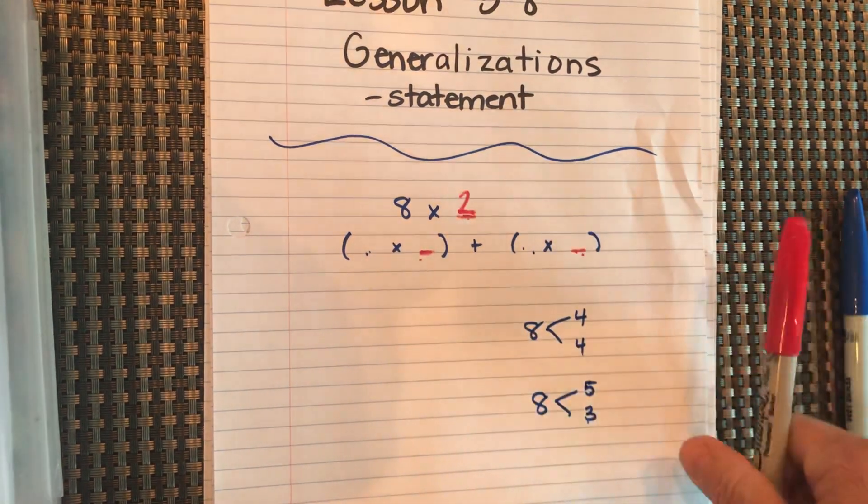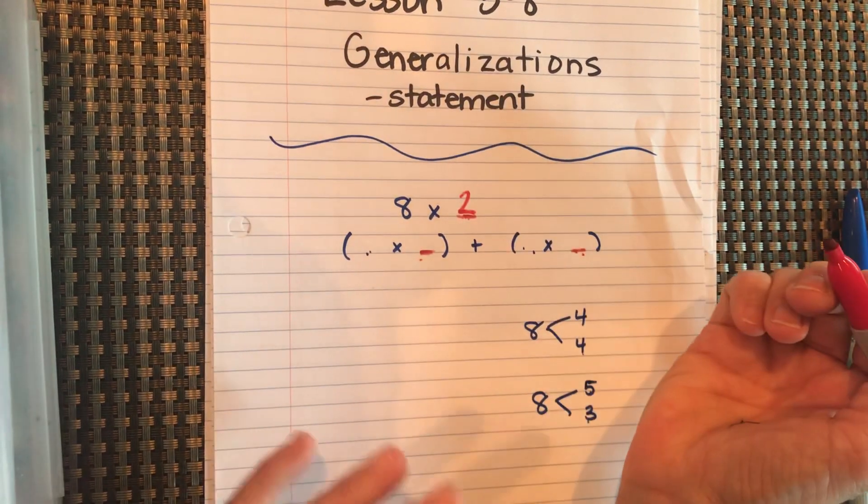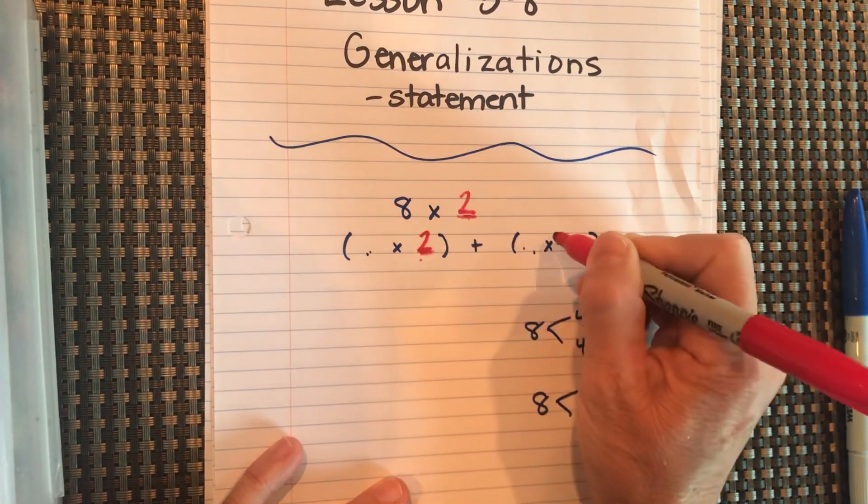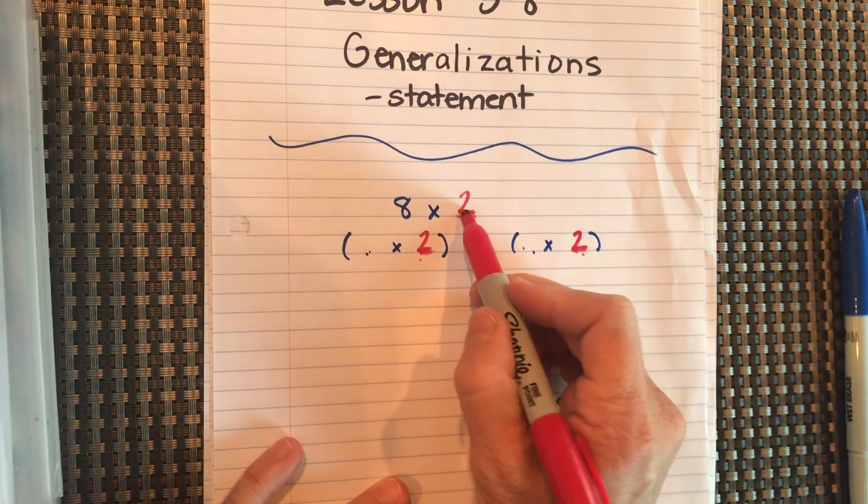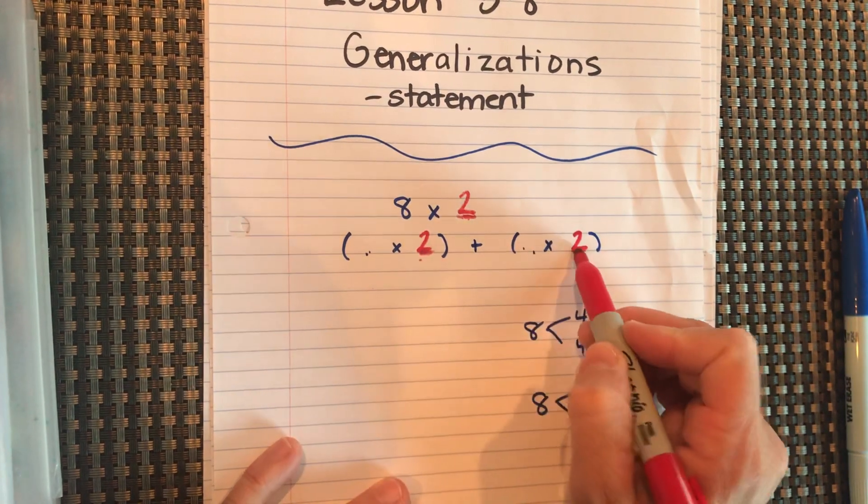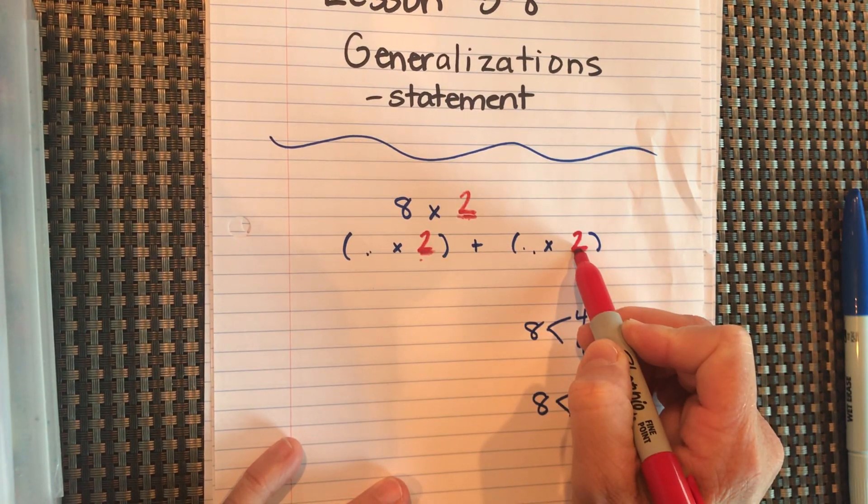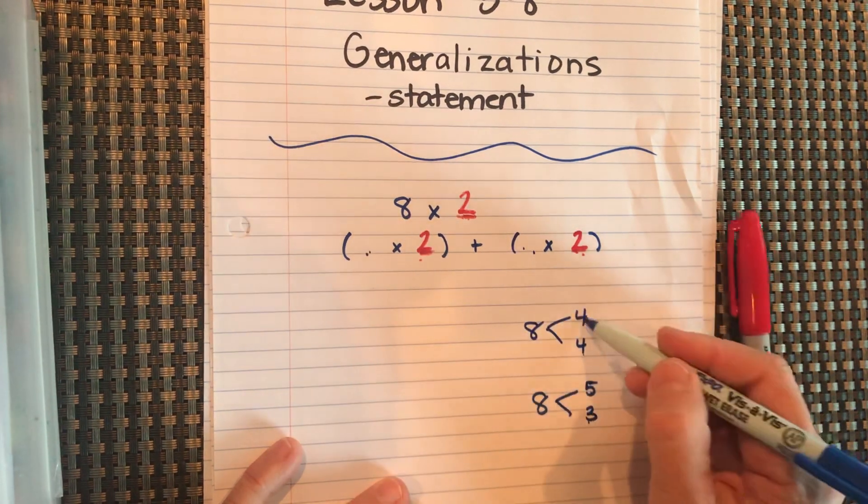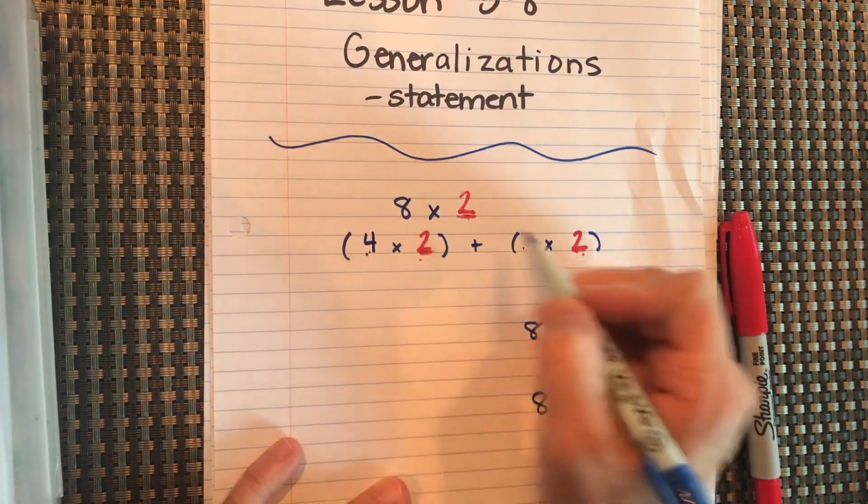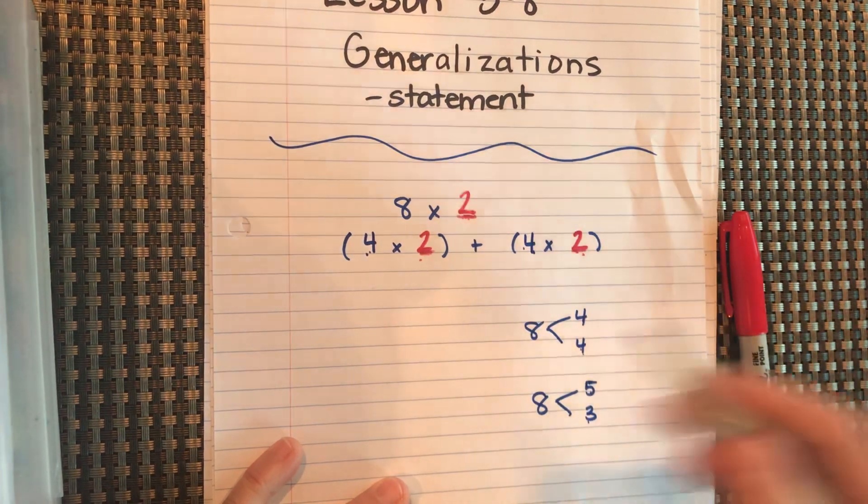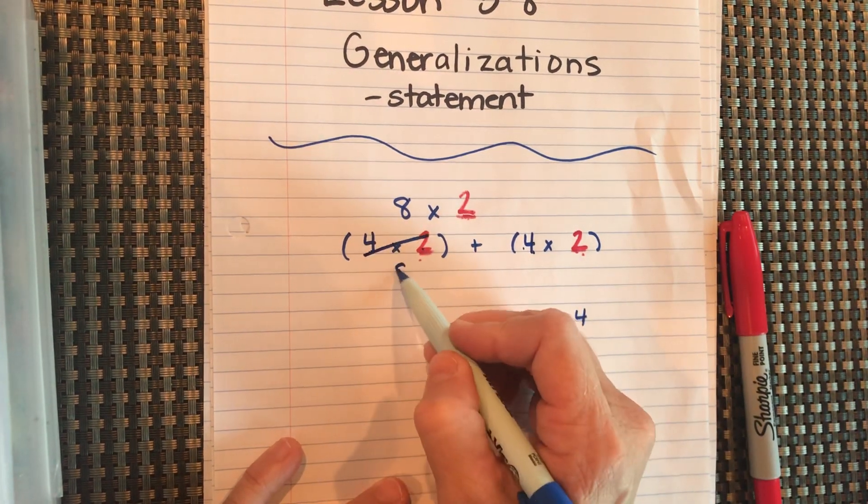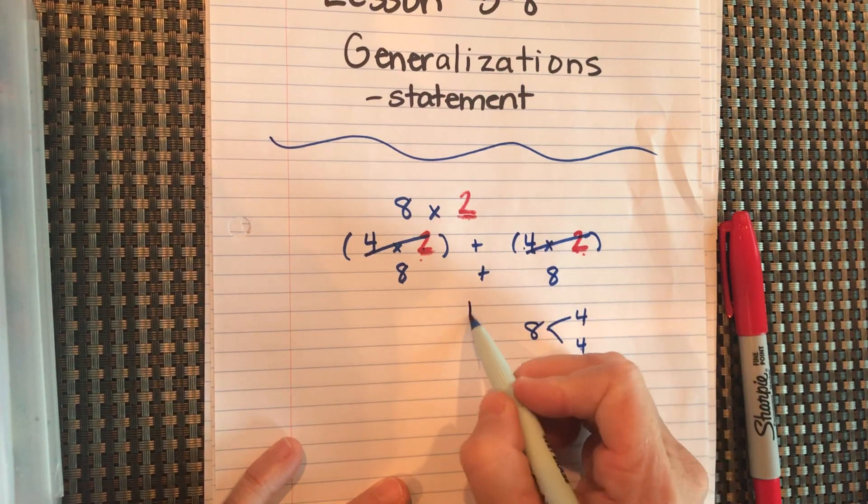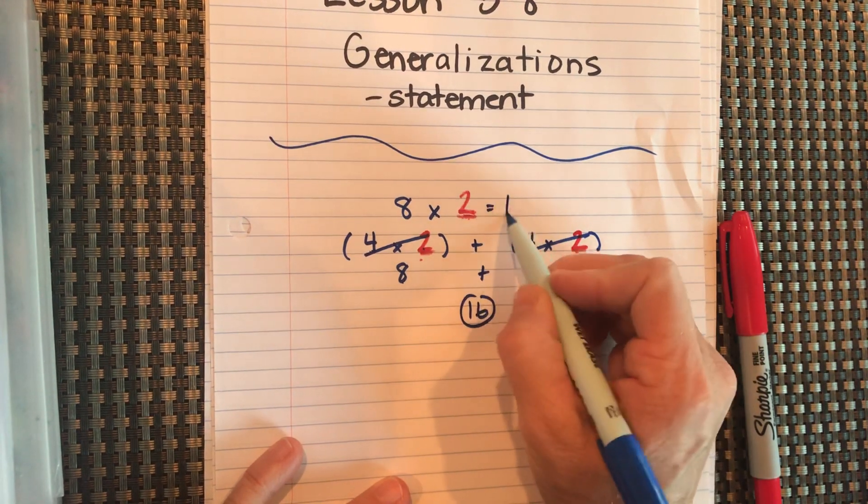Okay. I'm going to try it with 8 times 2. Yours may be very, very different than this, but this is just one way. So, if I put a 2 there, I put a 2 there, and I put a 2 there. So, whatever number you have here should be the same in that second factor position. I'm going to choose to break 8 into 4 and 4. Okay. 4 times 2 is 8, and 4 times 2 is 8, and 8 plus 8 is 16. Therefore, 8 times 2 is 16. You could have also...